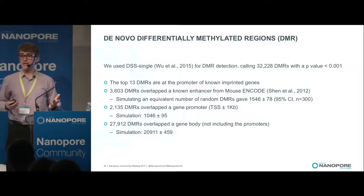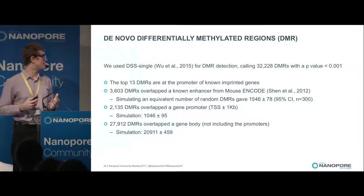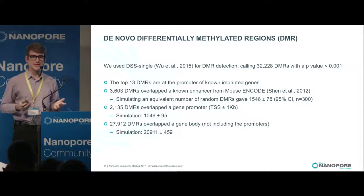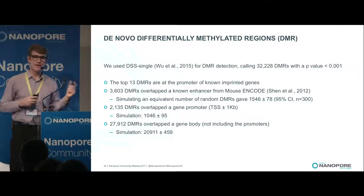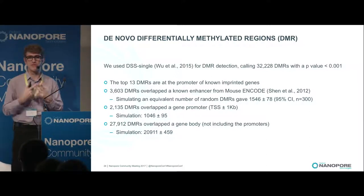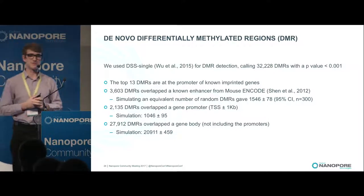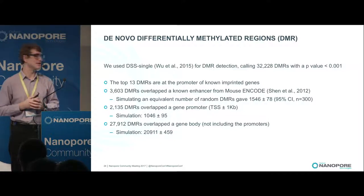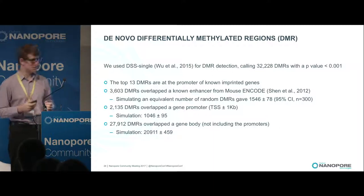Finally, can we discover new differentially methylated regions or new imprinted genes? Using DSS, we called 32,000 DMRs with a p-value of 0.001, and in each case for enhancers, promoters, and gene bodies, there is substantial enrichment of overlap compared to a random distribution of DMRs we simulated. While this is limited in terms of the clustering of genomic features, we do think at least some of these DMRs have genuine biological effect behind them and not just noise.